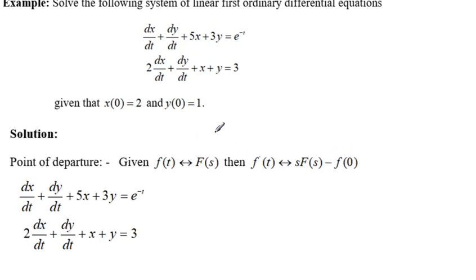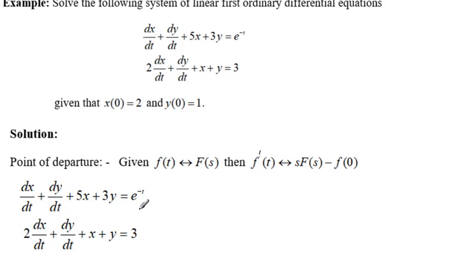So what is the point of departure here? First of all, we know that if we are given a function of t, its Laplace transform is written as F(s), and the Laplace transform of the derivative of that function will be s multiplied by the Laplace transform of the function minus the initial value. We are going to apply this to this system of equations.